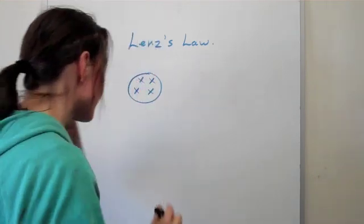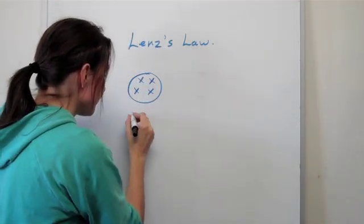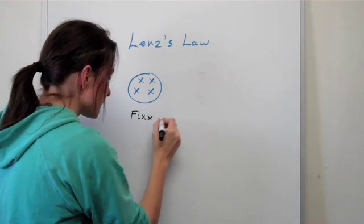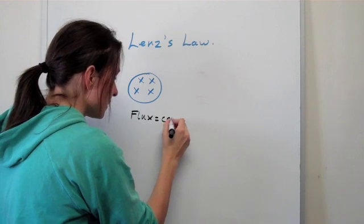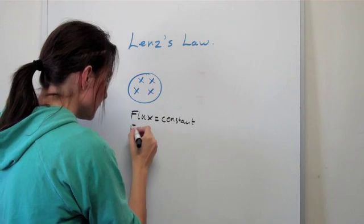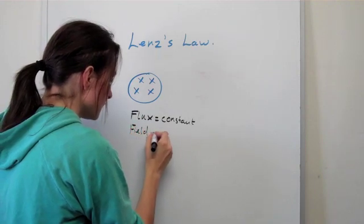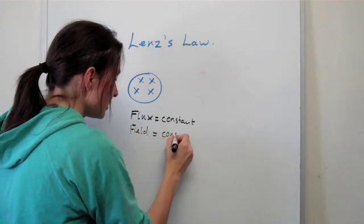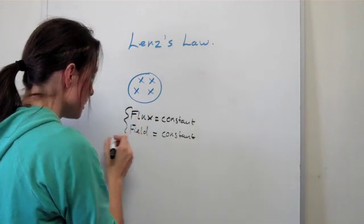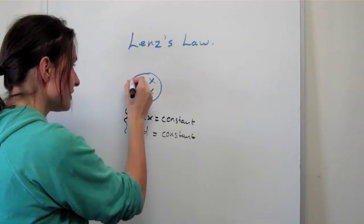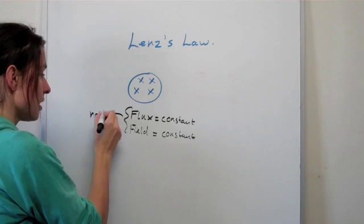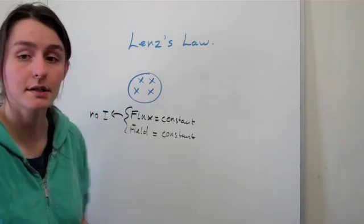Let's look at this particular wire. In this case the magnetic flux is constant, so because the flux isn't changing, the field is also constant. In a system with constant field and constant flux, you have no current being generated — that wire does not have any current; no I, with I standing for current.